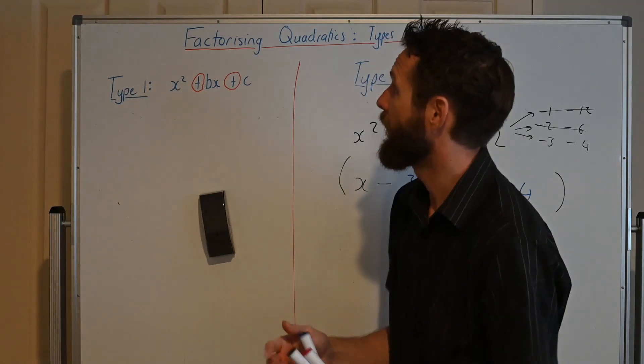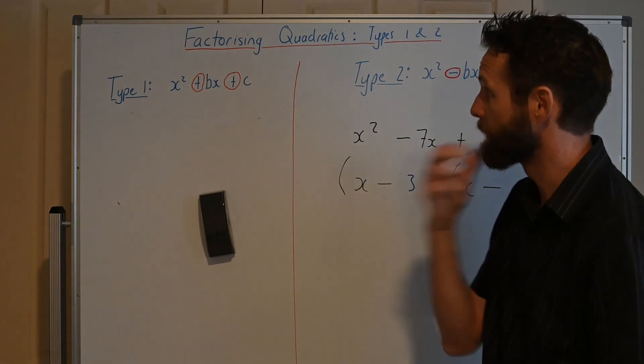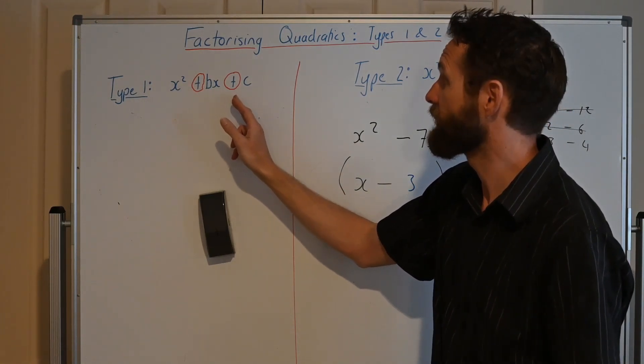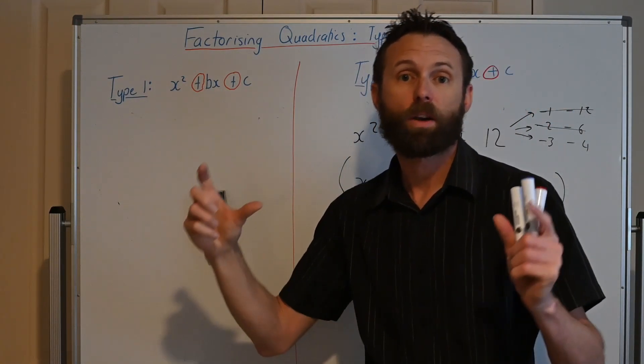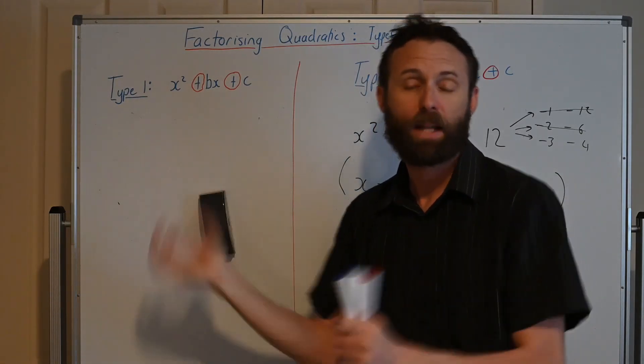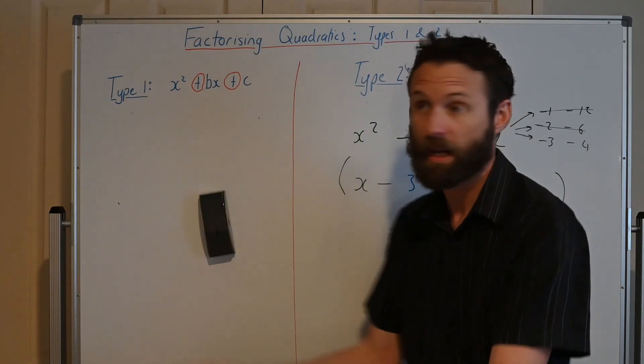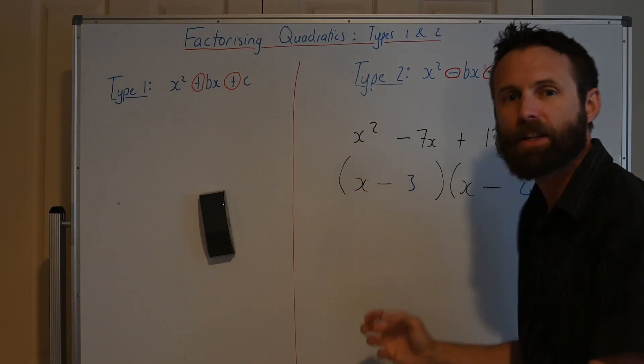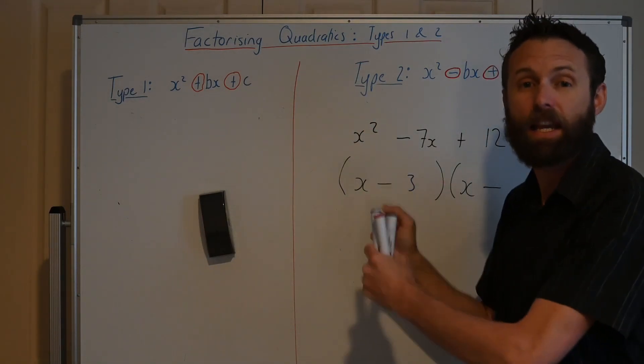Two different types of quadratic that we can now factorise. The type where we've got a positive bx and a positive c, we know straight away that we've got (x + something) bracket (x + something), so two positives in the brackets. Type 2, when we've got a minus bx and a plus c, that means we've got (x - something), (x - something).